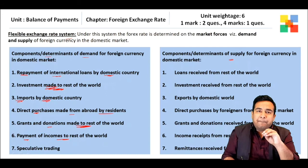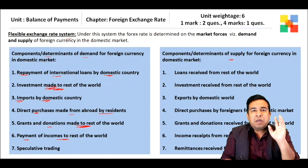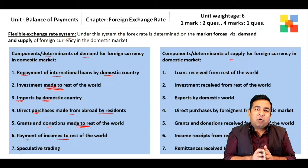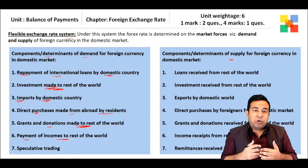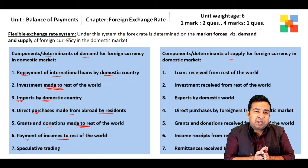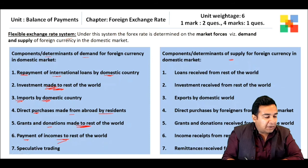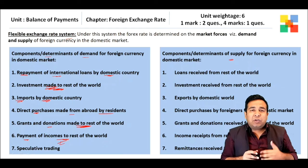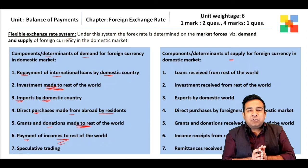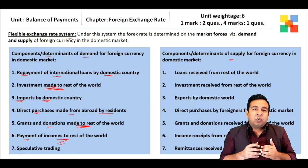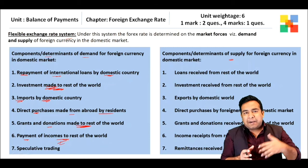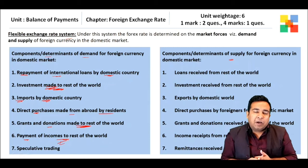Payment of income to rest of the world also adds to demand — for example, if you own a business in New York employing US locals, income paid to them is in US dollars, adding to demand for US dollars in our country. The last determinant is speculative trading — people speculate on dynamic pricing and demand foreign currency for that purpose.